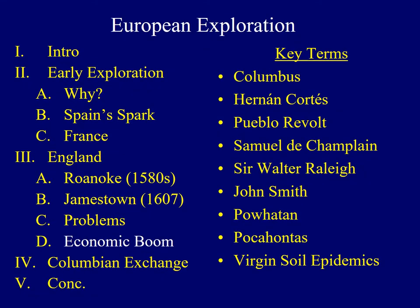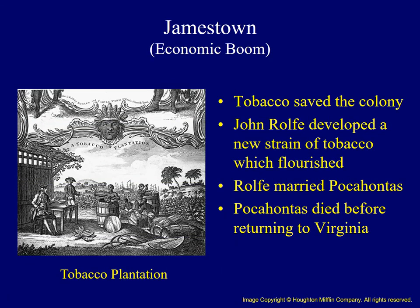Although the death rate was appalling, colonists continued to arrive in Jamestown. The colony was eventually saved by tobacco. Smoking had become a popular habit in England during the mid-1500s, and John Rolfe had succeeded in developing a strain of tobacco which flourished in Virginia and was popular among smokers. Rolfe later married Pocahontas, the daughter of Powhatan, which led to an easing of tension between the Powhatans and the colonists. In many ways Pocahontas served as a diplomat for her people, even traveling to England and holding an audience with the king and queen. She died, however, before she could return to her homeland.